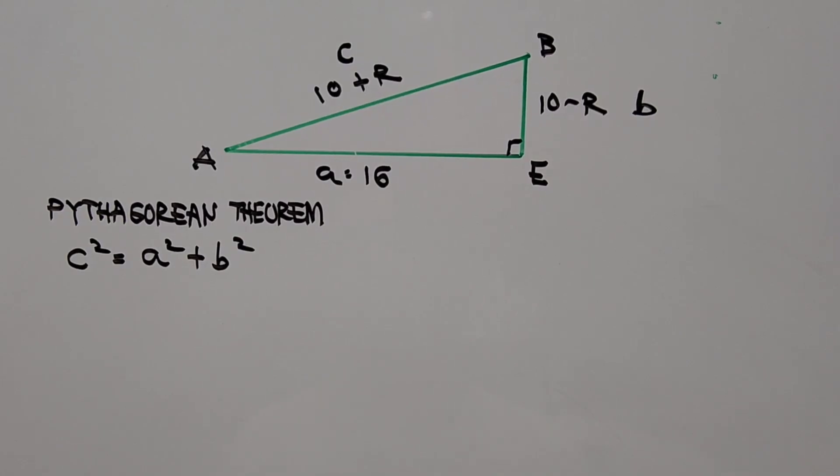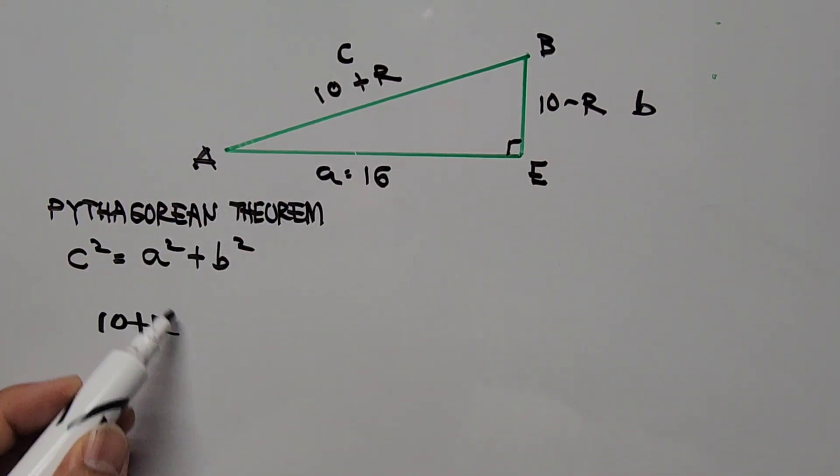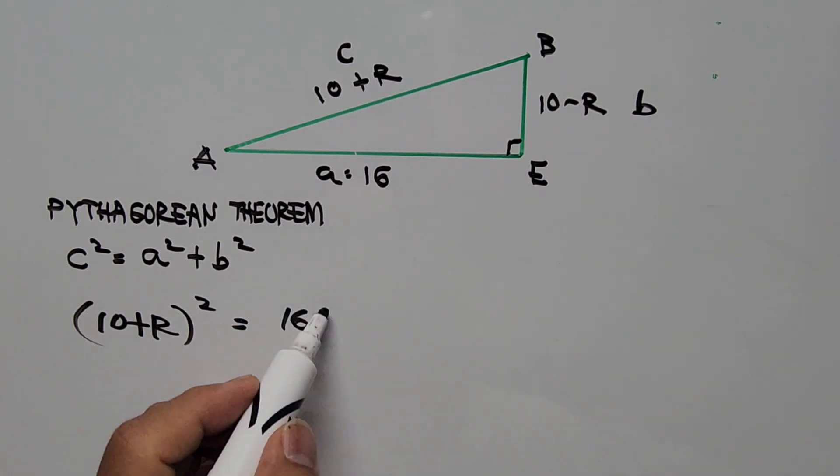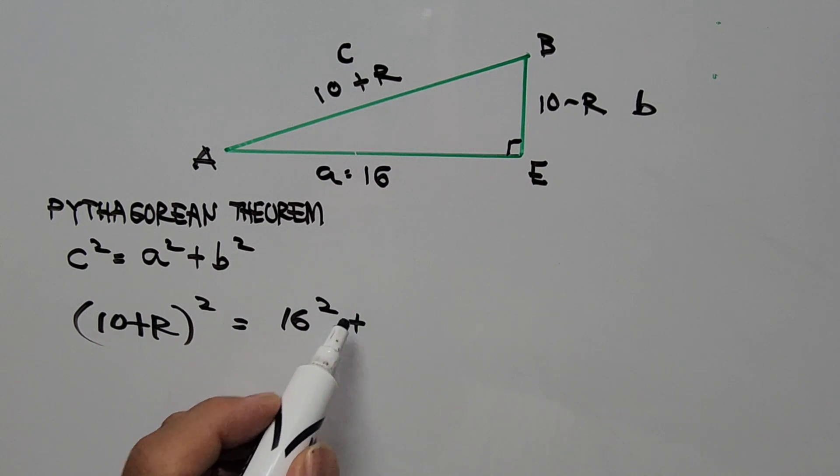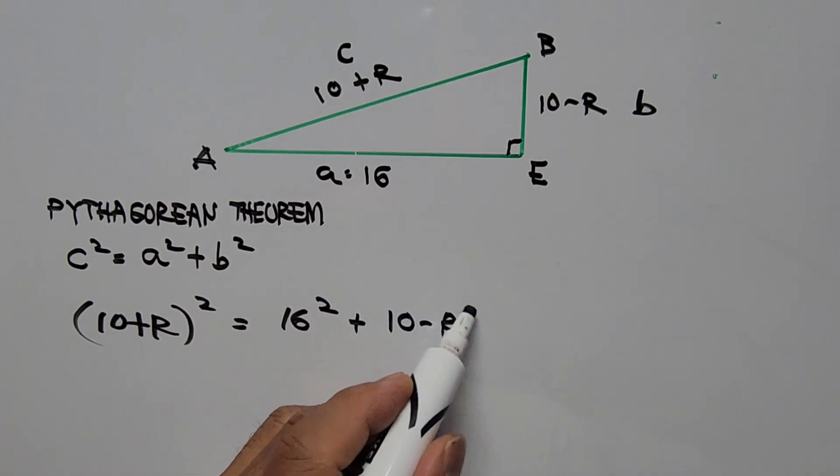By using Pythagorean theorem on our triangle, we have C squared is 10 plus R squared equals A squared is 16, so that's 16 squared, then plus B squared is 10 minus R squared.